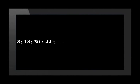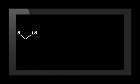Let's revise this by using an example. Here is the number pattern: 8, 18, 30, and 44. How would you find the next two terms of this pattern? Let's start by working out the first difference. The difference between 8 and 18 is 10, and the difference between 18 and 30 is 12. It is clear that there isn't a constant first difference. Now we need to calculate the second difference. If this is constant, it means that the number pattern is quadratic.